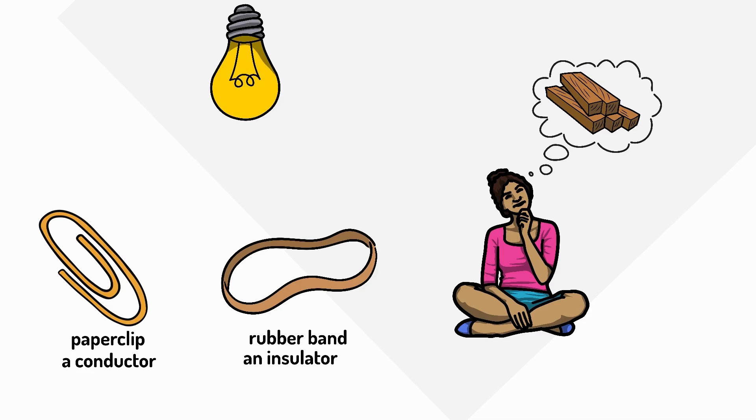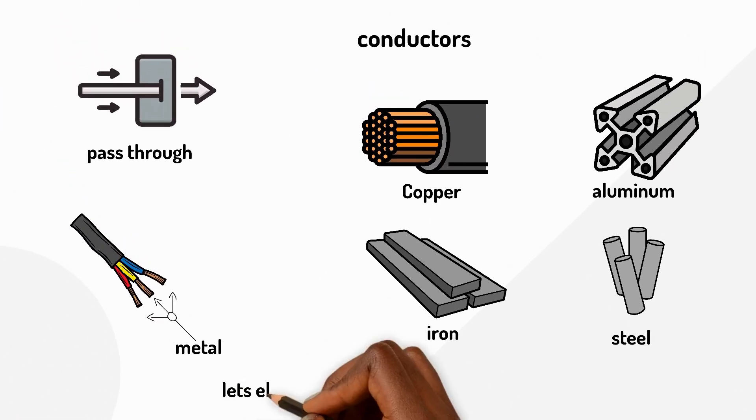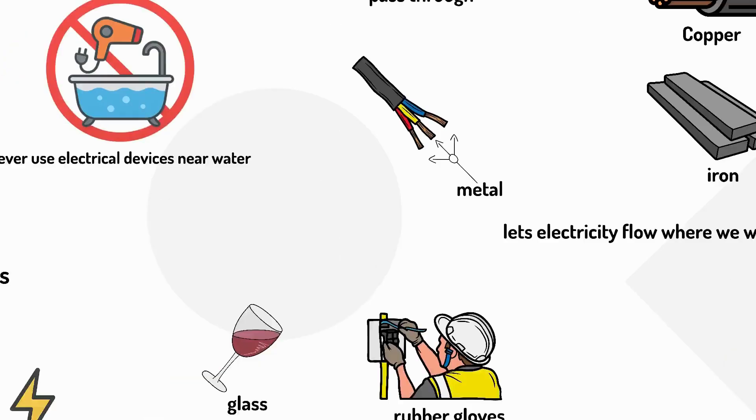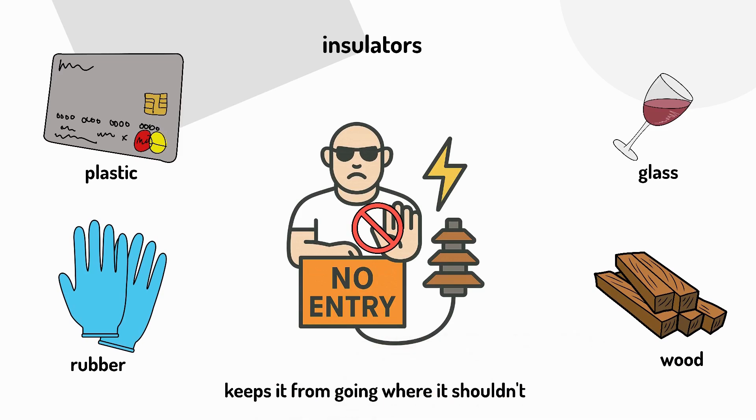We use conductors and insulators together to make electricity work safely for us. The conductor lets electricity flow where we want it to go, while the insulator keeps it from going where it shouldn't.